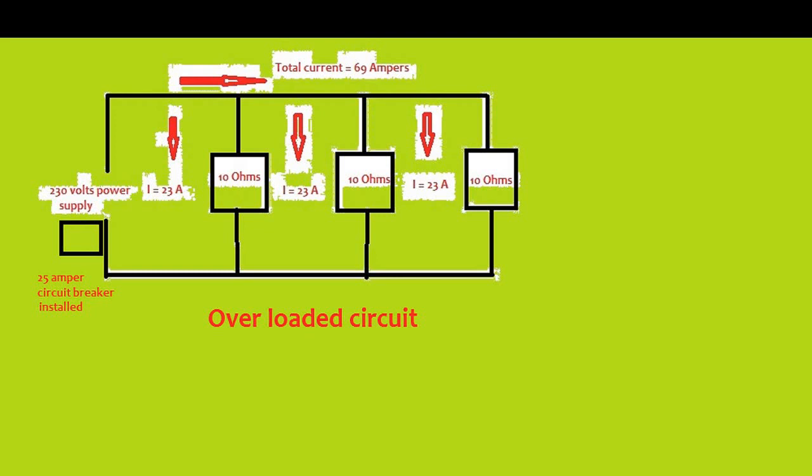If we compute the total current in this circuit, we use the Ohm's law formula: current is equal to voltage over resistance, and we have a total of 69 amperes current in the circuit. So the circuit is overloaded, and if we don't have fuse or circuit protection device installed, it may cause the wire to get hot and damage the wire insulation all over the circuit.